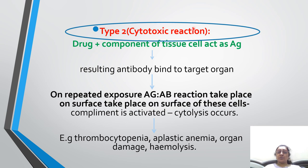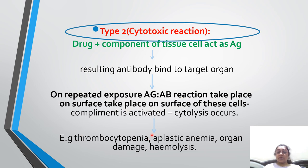Type 2 is the cytotoxic reaction. Drug plus a component of the tissue cell acts as an antigen. Drug combined with our own body's tissue acts as antigen, resulting in antibodies binding to the target organ. This antigen-antibody reaction takes place, complement is activated, and cytolysis can occur. Thrombocytopenia, aplastic anemia, and organ damage can occur due to cytotoxic reaction.